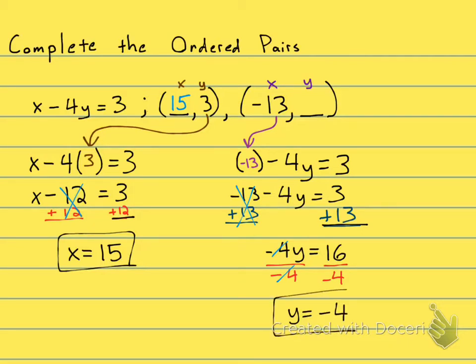Okay, so to complete this ordered pair right here: X is negative 13, Y is negative 4, and this is another point on this line. Thank you.